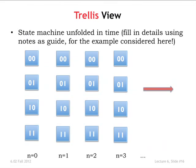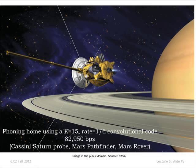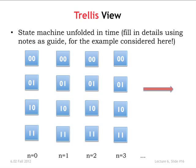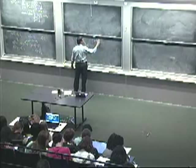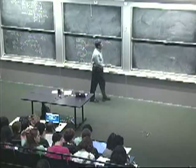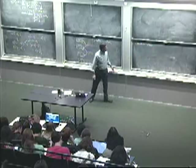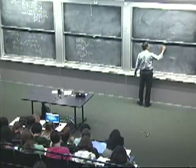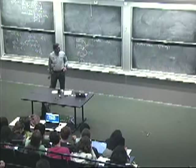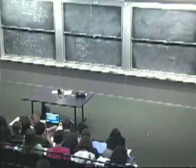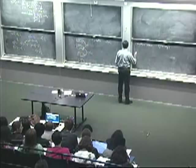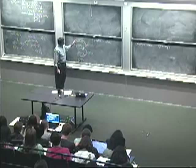I want to go from the state machine view to another view called the trellis view. This was a way of looking at things developed by David Forney, who is on our faculty. The trellis view takes the state machine and unfolds it in time — every time step, you draw the picture again and look to see where you get to.